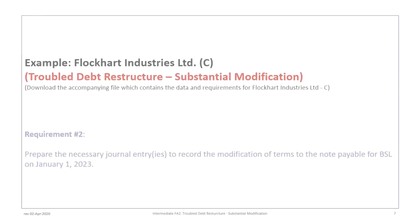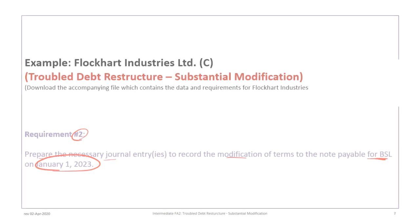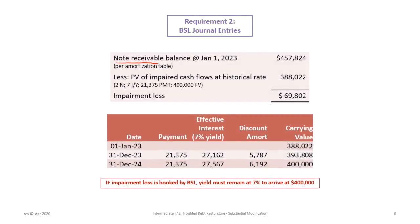Since this is a substantial modification, the old debt will be settled and a new debt assumed by Flockhart. Requirement two is to prepare the necessary journal entries to record the modification for the note payable for BSL on January 1st, 2023. The value of the note at that date is $457,824 from the amortization table. We calculate the present value of the impaired cash flows at the historical rate of 7%, with two periods remaining, a payment of $21,375, and future value of $400,000, giving $388,022. This results in an impairment loss of $69,802 — equal to the concession amount.